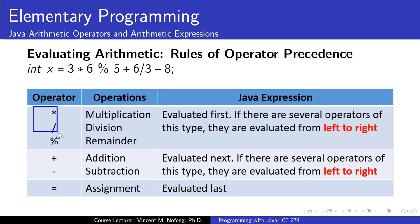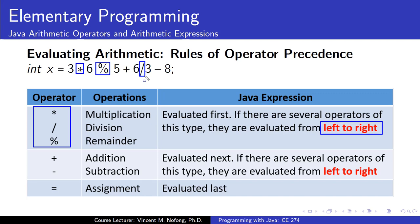The rule of operator precedence works as follows: it will first consider operators such as multiplication, division, and remainder. These are evaluated first, from left to right if there are multiple. Then the next set of operators — addition and subtraction — are also evaluated from left to right.